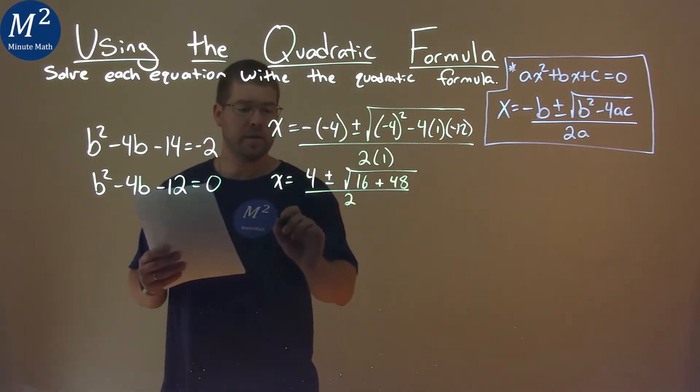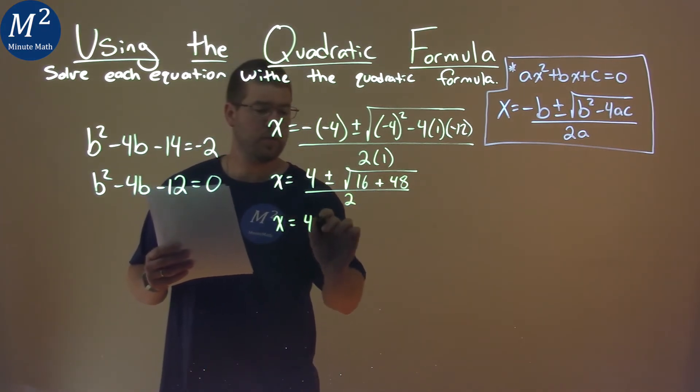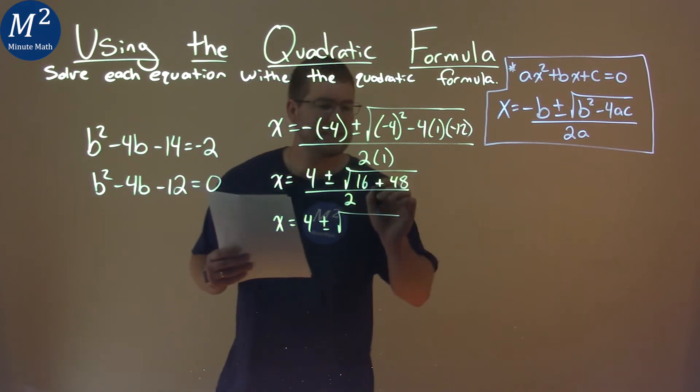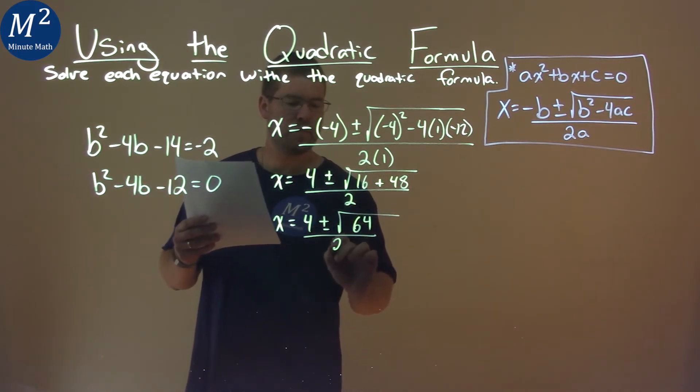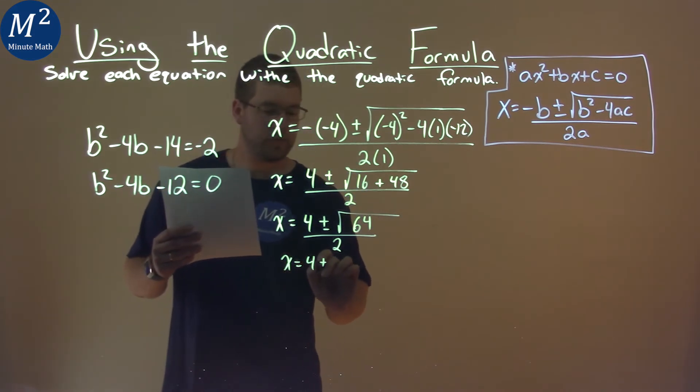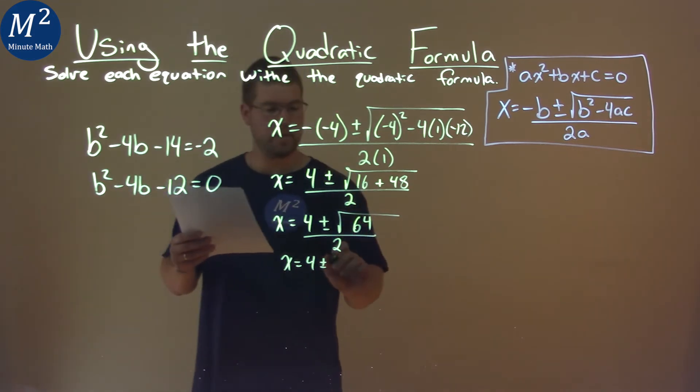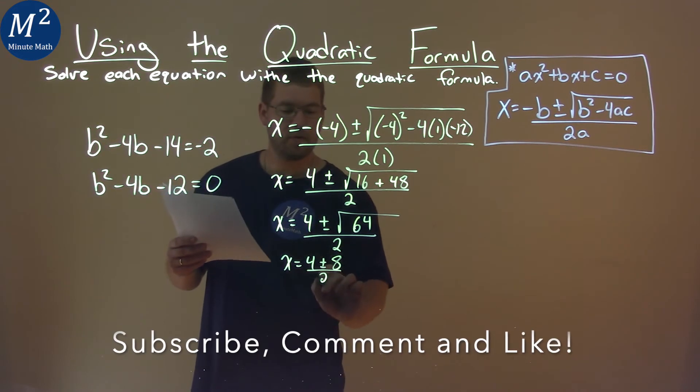Keep on going here. x equals 4 plus or minus, and 16 plus 48 is 64, all over 2. x equals 4 plus or minus the square root of 64, which is 8, all over 2 now.